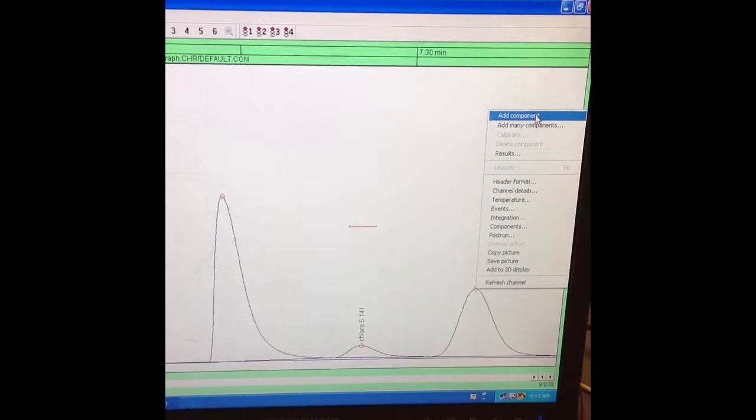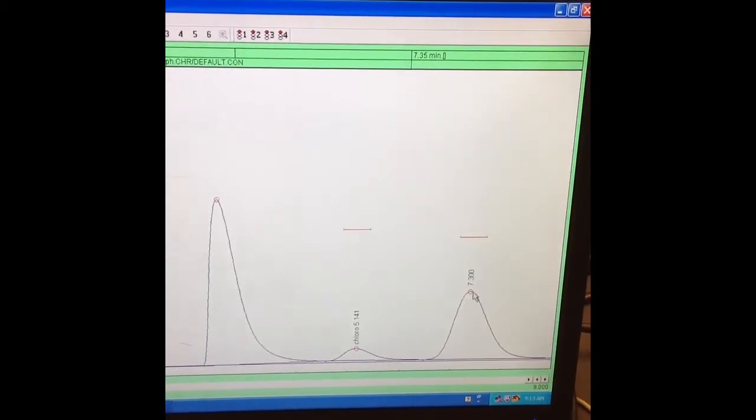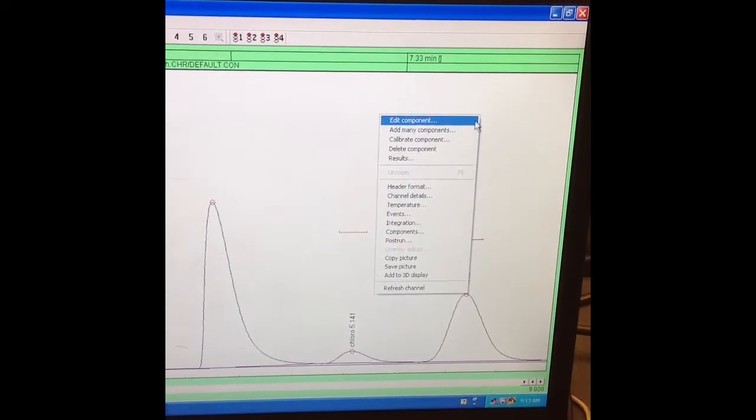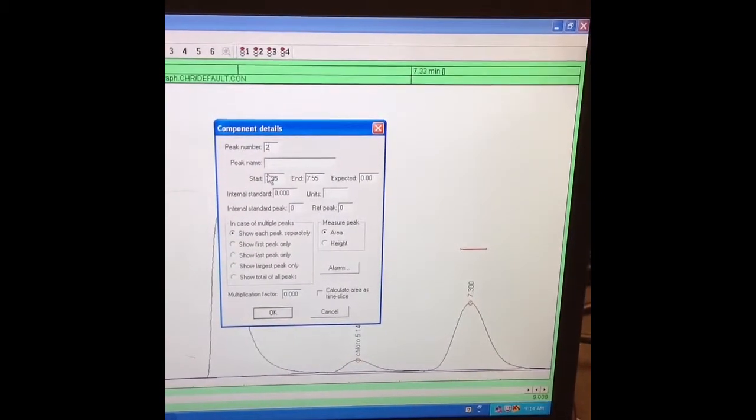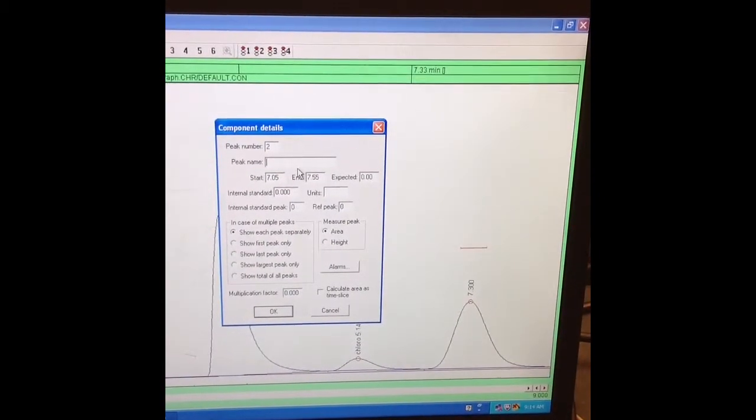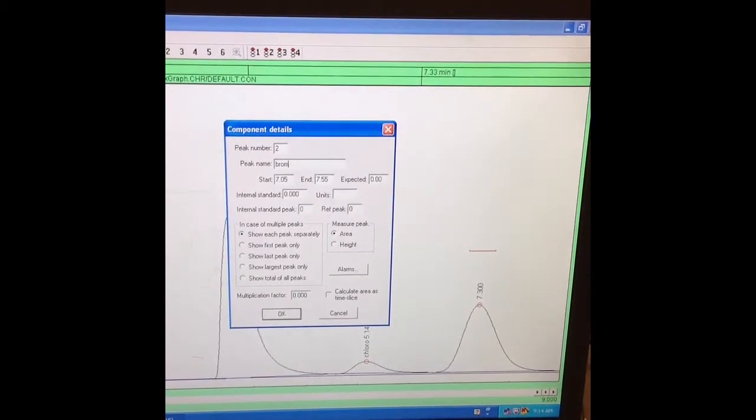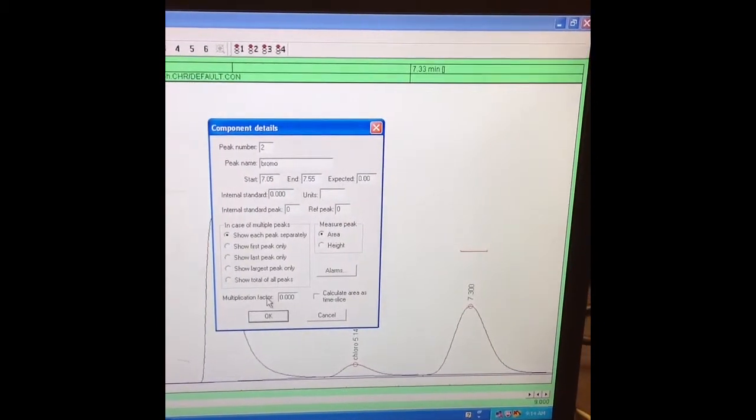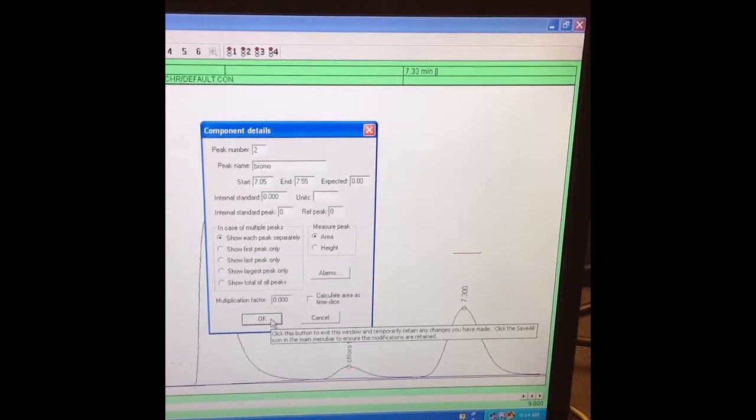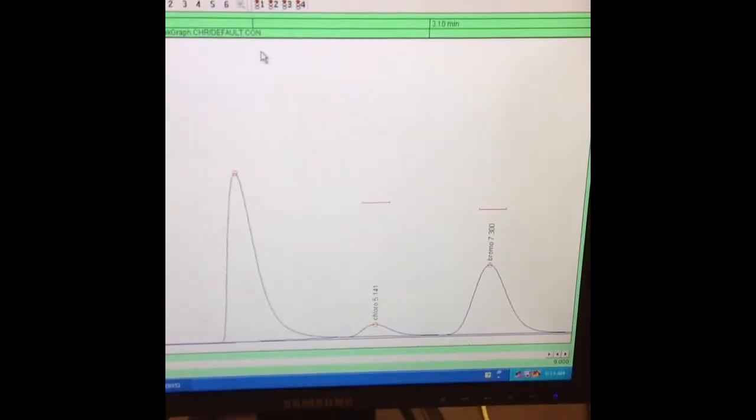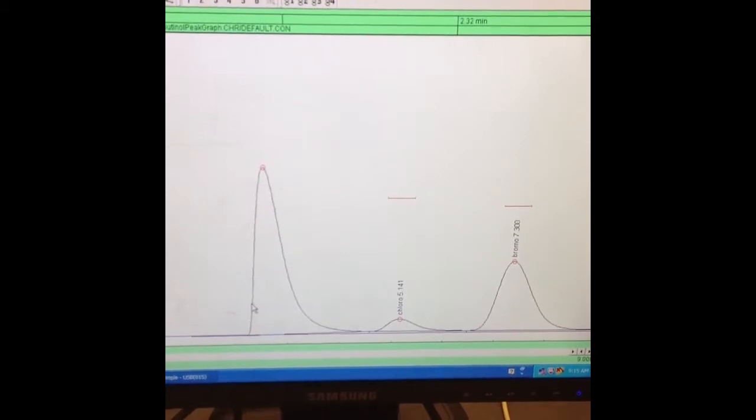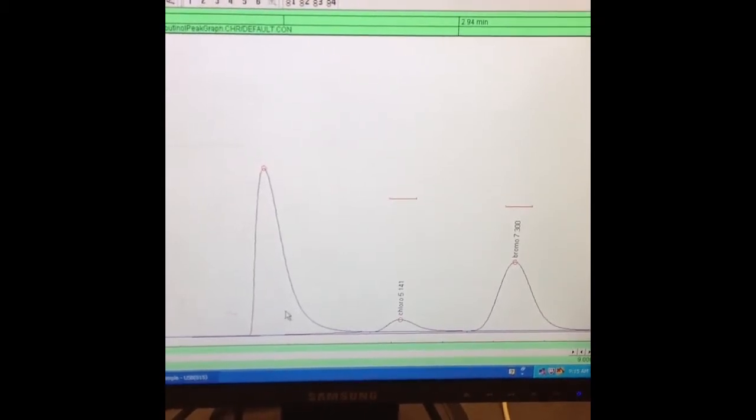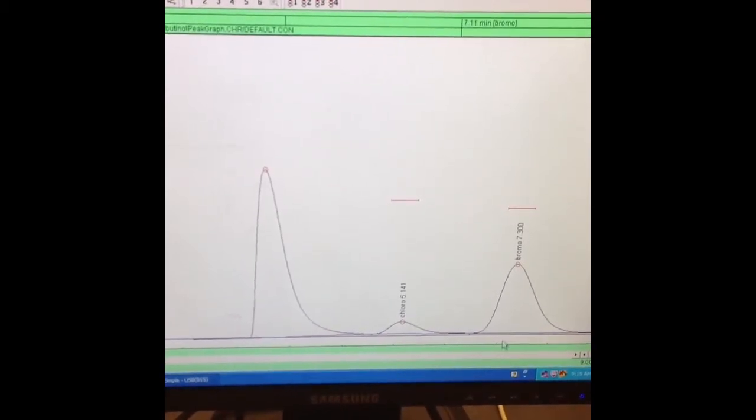And then same methods for this. So I'm going to add a component, go back, and then edit that component. Call this Peak 2, and I'm going to name it bromo. And again, we know that it's based off of standards. So pentane, we really don't care about this peak because it's a solvent, and we really care about our products done here at chloro and bromo.